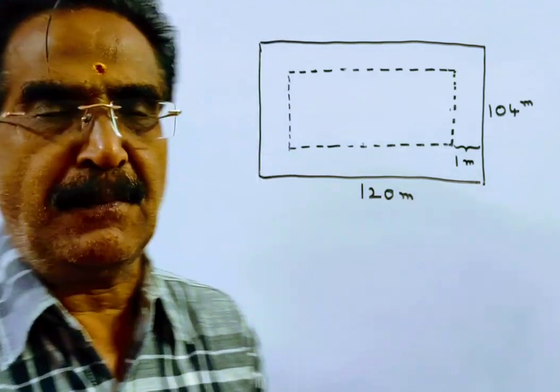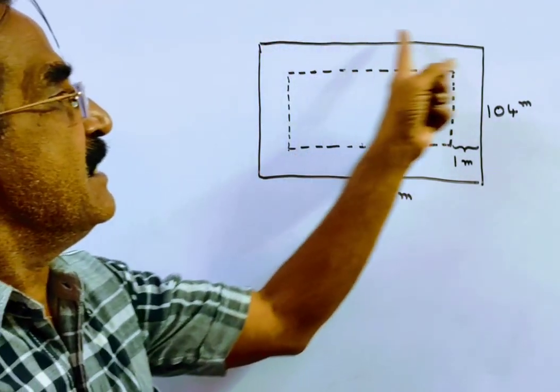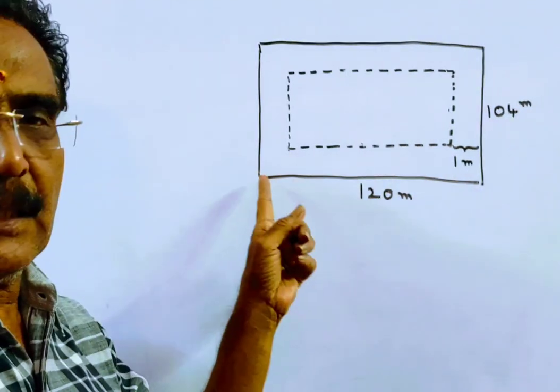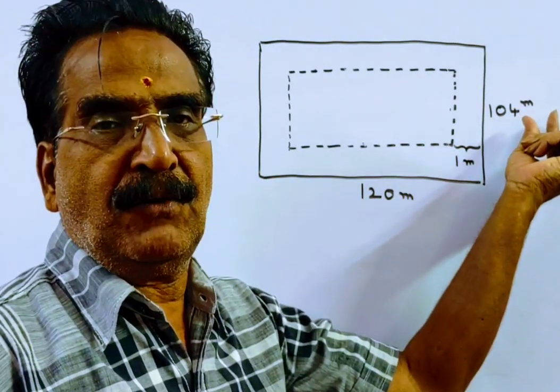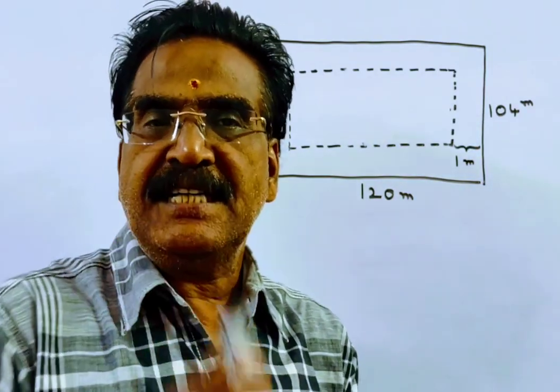Friends, the problem is given in the description box. This is a rectangular park whose length is 120 meters and breadth 104 meters.